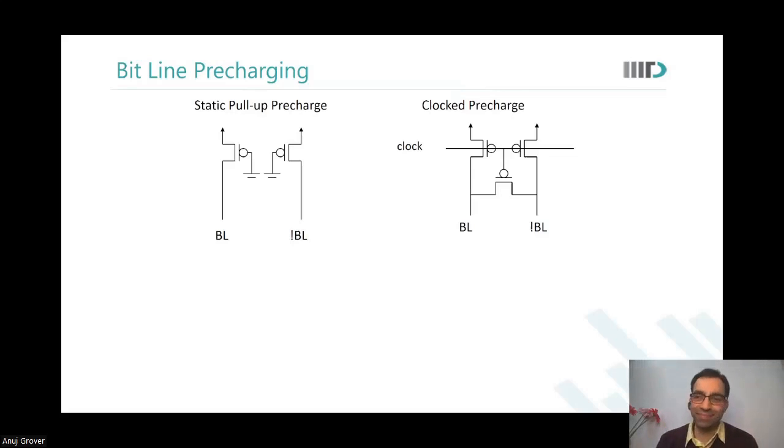This clock should arrive a little earlier than the word line, so that when the word line comes the precharge is already off. There is no short circuit path. This is an internally generated clock. Typically you call it the precharge clock. This clock will typically go to the precharge circuit. Whenever the active read or write cycle is happening, the precharge would turn off.